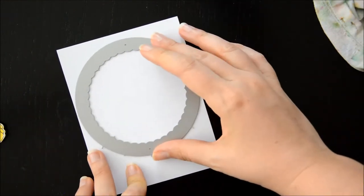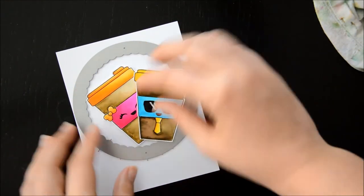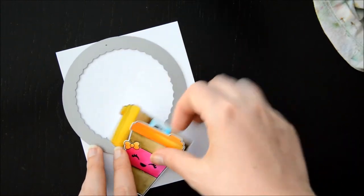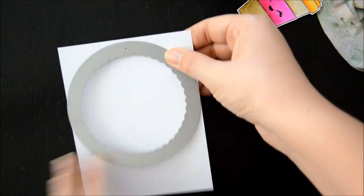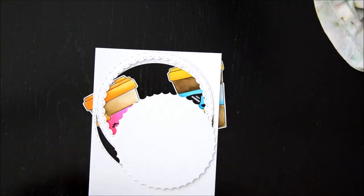I am using this circular die by Crafting Desert Divas to cut a circular opening on my card front, because as I said at the beginning of this video, I'll be creating a shaker card.